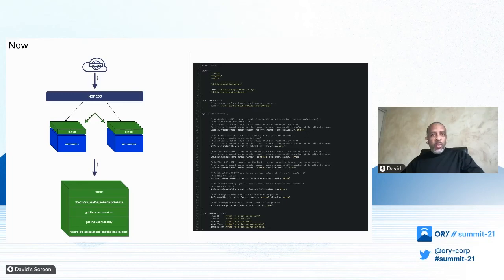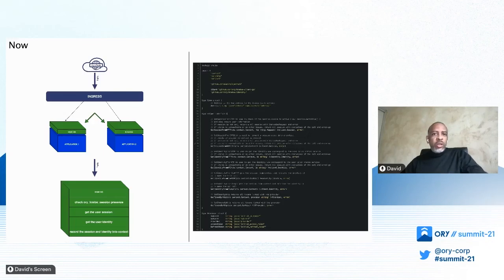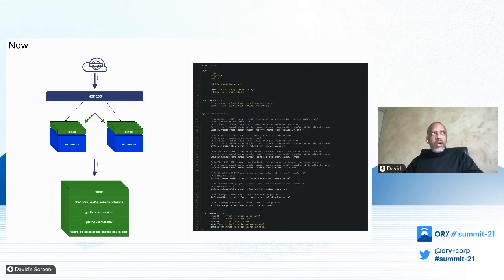Our Kratos layer accomplishes four steps on each request. It checks that the ORI Kratos session is present in the HTTP header, in the cookie, or in gRPC metadata — we use gRPC calls between microservices. With this cookie, it gets the user session from the Kratos API. Then, if something goes wrong, a different unauthorized message is sent. Then we repeat the same behavior to get the identity of the user. Finally, we record the session and the identity into the context, which is then distributed into the application along with the request.